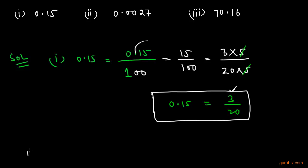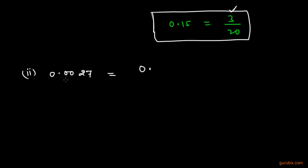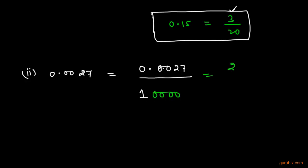Now we shall move to the second part, which is 0.0027. We write this decimal number in the numerator and 1 in the denominator. We count the digits in the decimal part — there are 4 digits. So we write 4 zeros with this 1, remove the decimal point, and we get 27 over 10,000. So this is the P by Q form of 0.0027.